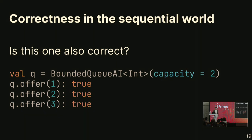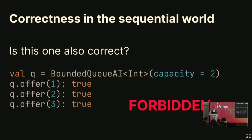What about this one? Now we have three offers, all of them succeed. Is it correct? Who thinks it's not? Everyone. It's very clear when we live in the sequential world — it's incorrect because the last offer must fail with the queue capacity equal to 2.